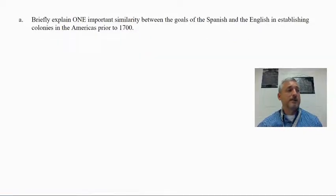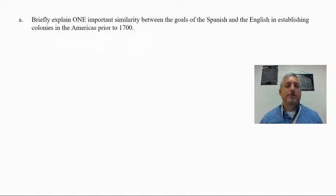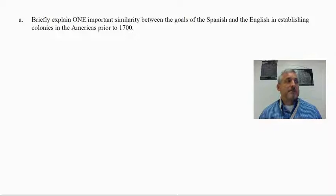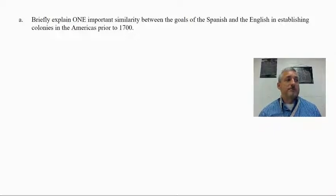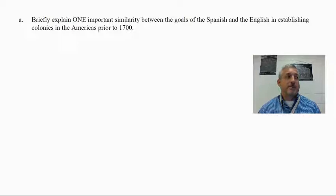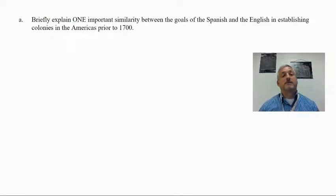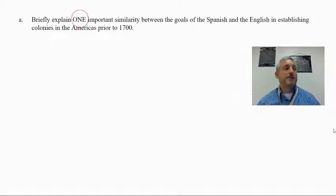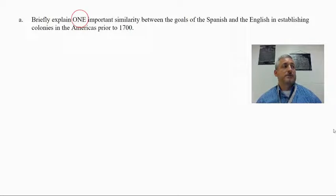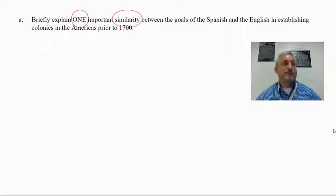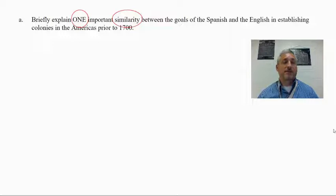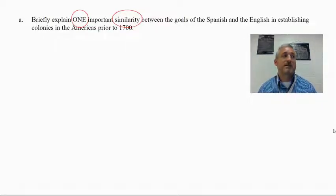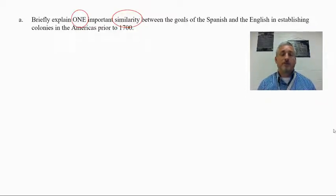Let's take a look at Part A and show you how we work the steps for ACE. Part A is asking to briefly explain one important similarity between the goals of the Spanish and the English in establishing colonies in the Americas prior to 1700. The first thing you want to do is make sure you understand what the prompt is asking — in this case, one important similarity, something that is the same between the goals of both nations.